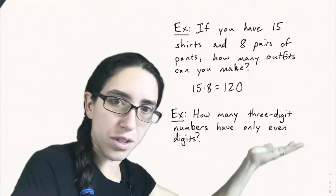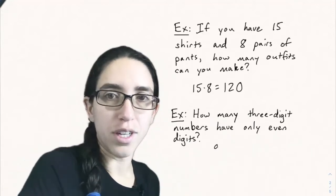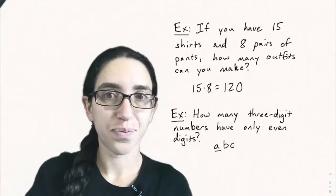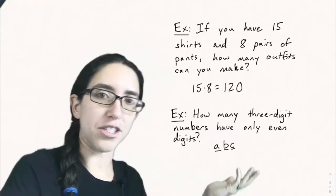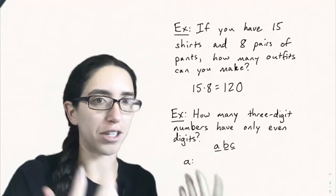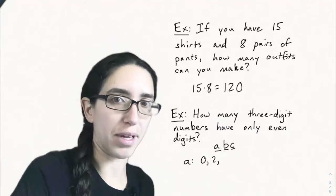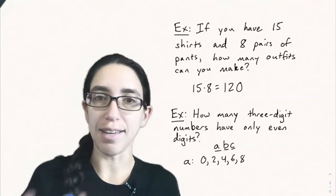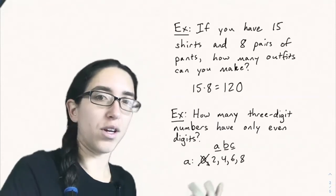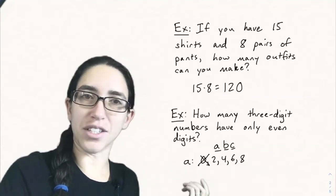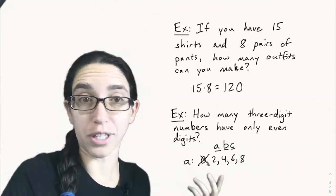Here's a more sophisticated example. How many three-digit numbers have only even digits? So let's write the three-digit number as ABC and we're trying to figure out how many possibilities there are for A, B, and C. Well since the digits are even each of A, B, and C can only be 0, 2, 4, 6, or 8 but A can't be 0 because otherwise it wouldn't be a three-digit number. You need to start with something non-zero for it to truly have three digits.